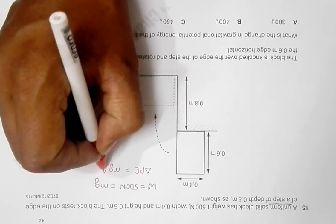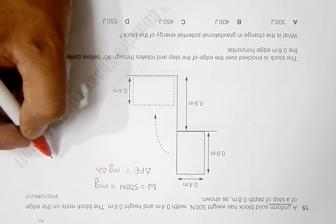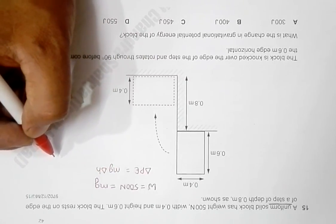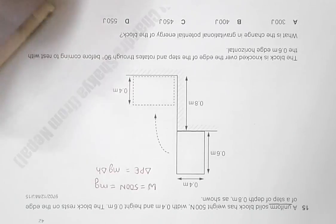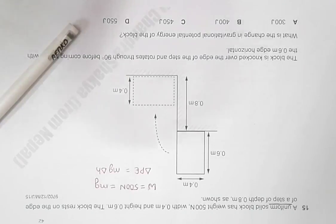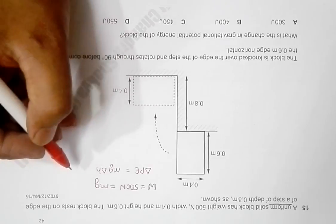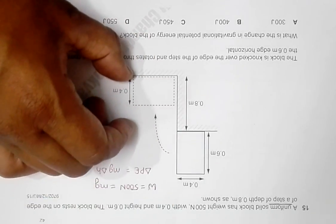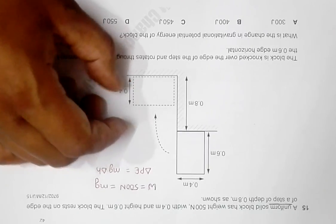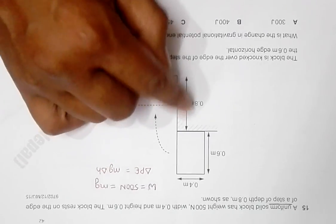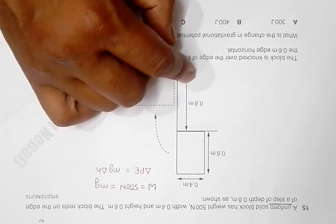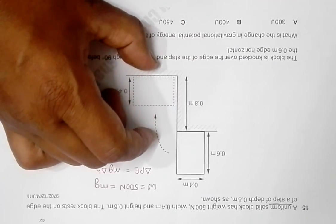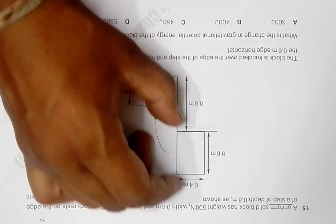If it had fallen straight down like this, we simply could have done mg into 0.8 because the change of height is simply 0.8 for every portion. But here it has rotated through 90 degrees, so we have to find what is the change of the height of the center of gravity of this body.